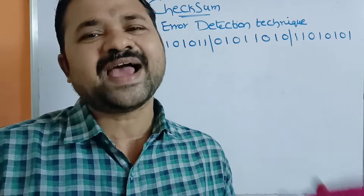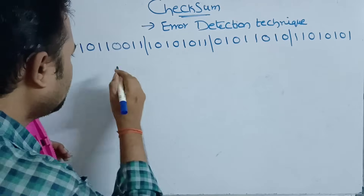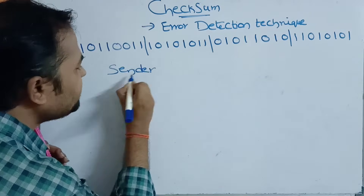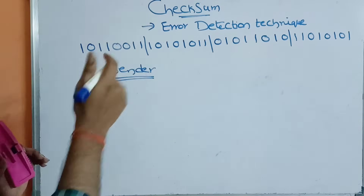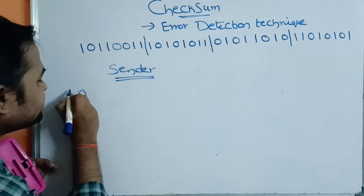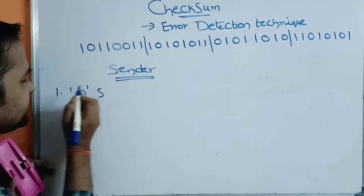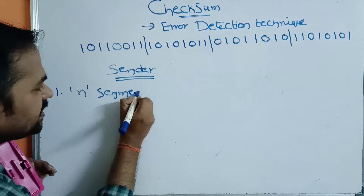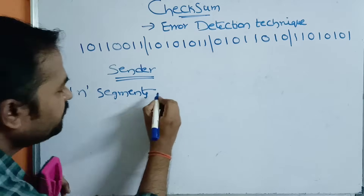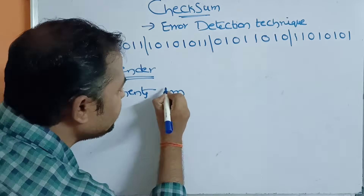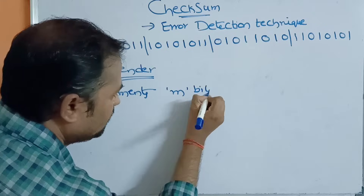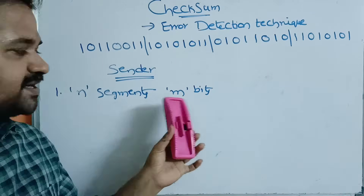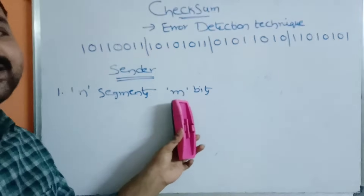Let's see what we have in Checksum. At the sender side, initially the message is divided into n segments, where each segment contains m bits.